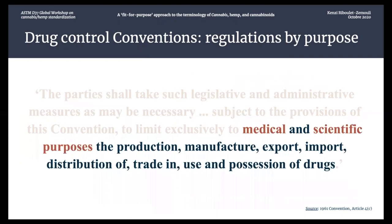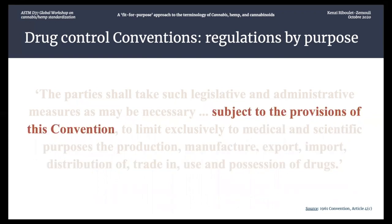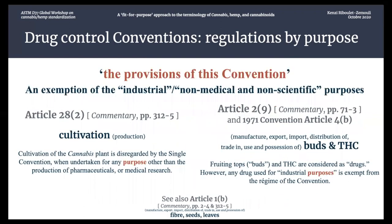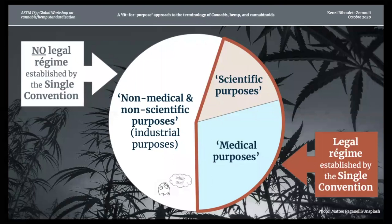These are three main treaties. The Single Convention is the most important since it includes cannabis as a plant, cannabis as products from the plant, and then the 1971 Convention, which includes THC. These conventions, like many other pieces of law, are articulated around the concept of purpose — proposed for the production, manufacture, export, import, distribution, trade, use, and possession of drugs. These activities are regulated when undertaken for medical and scientific purposes.